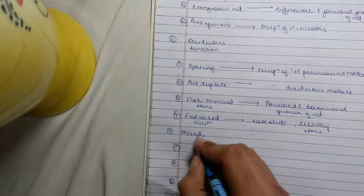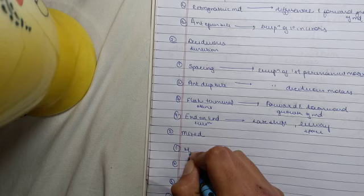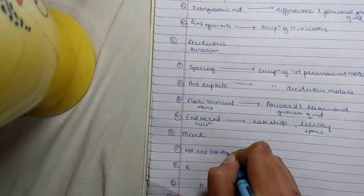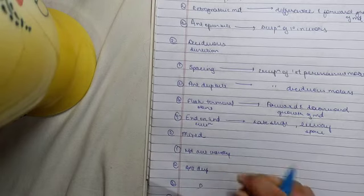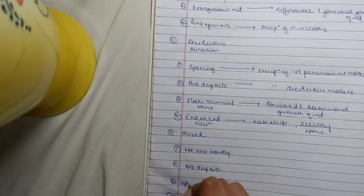Now, for the mixed dentition, you should remember MADE. M stands for mandibular anterior crowding, A stands for anterior deep bite, D stands for ugly duckling stage, E stands for end-on-end relation.